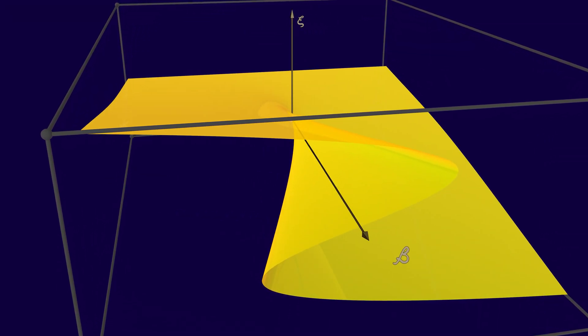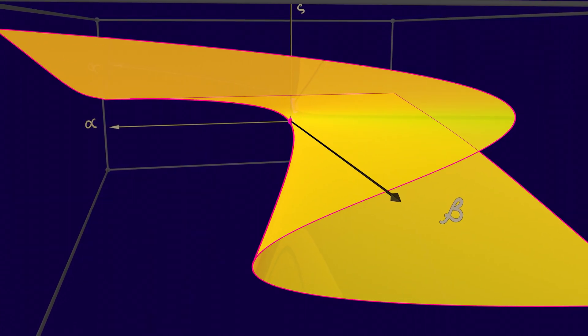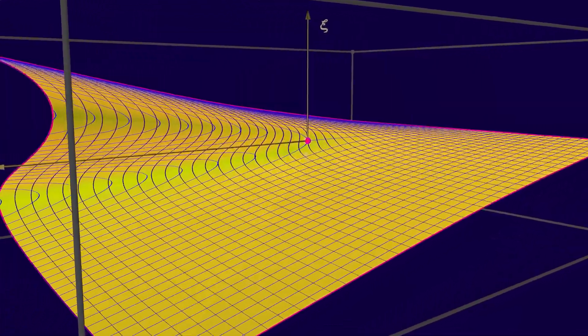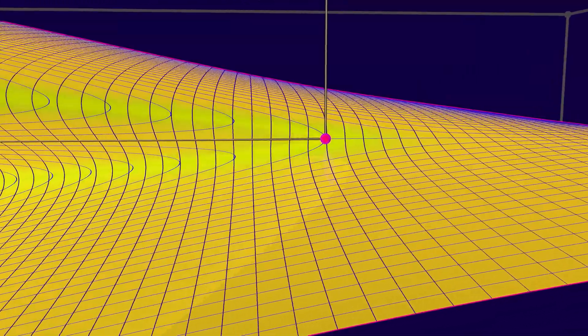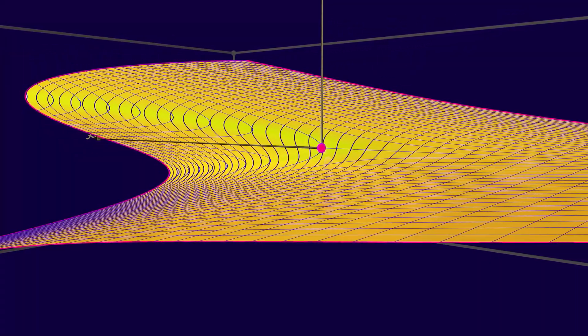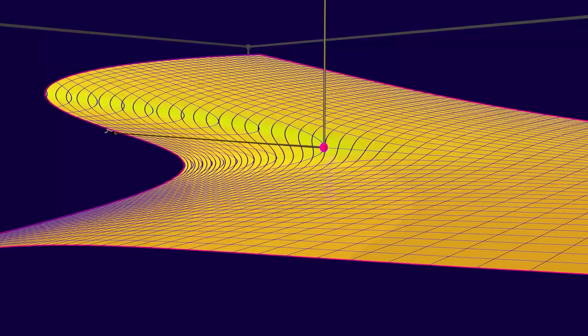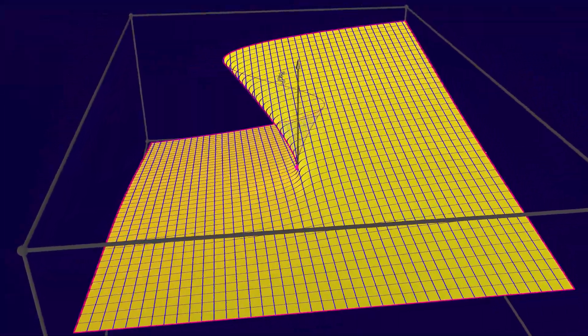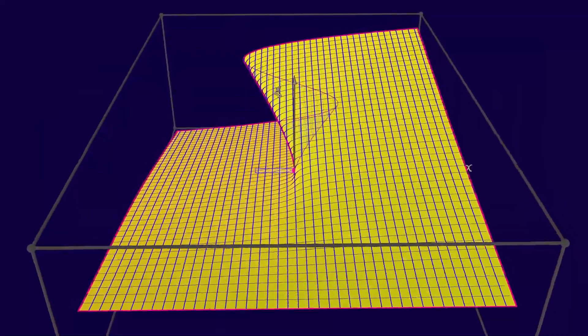If you take this and look at slices where you fix one of the parameters, either you fix beta to be a fixed quantity and then look at how alpha varies, or you fix alpha to be a fixed quantity and then look at how beta varies, then the way that it slices this cusp sheet tells you what kinds of bifurcations you have.